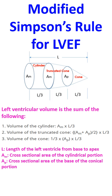The volume of the cylindrical portion equals its base area multiplied by one third of the left ventricular length. The volume of the truncated cone equals the average of the base area and top area of the truncated cone, multiplied by one third of the left ventricular length.